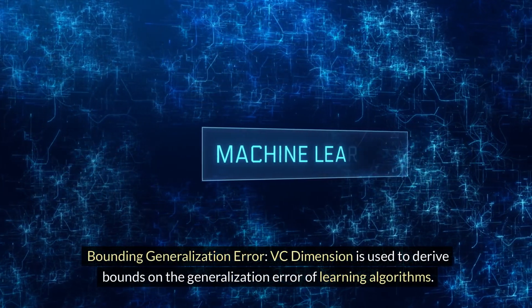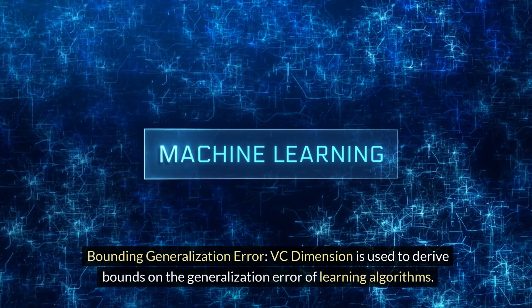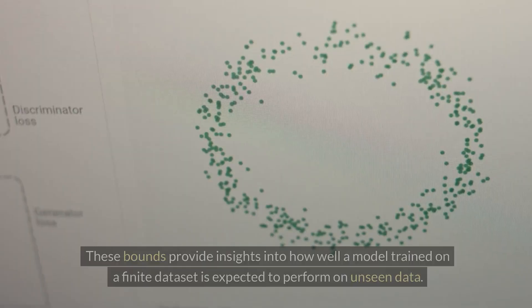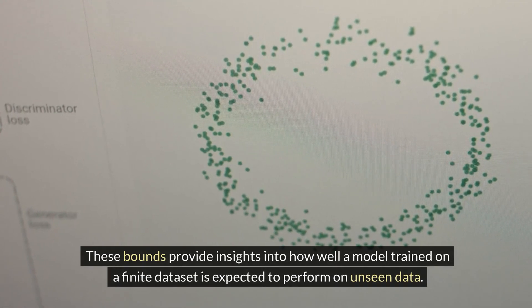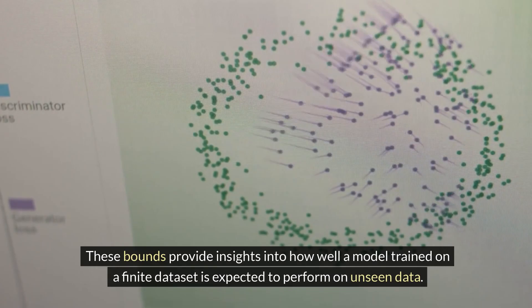Bounding Generalization Error. VC Dimension is used to derive bounds on the generalization error of learning algorithms. These bounds provide insights into how well a model trained on a finite dataset is expected to perform on unseen data.